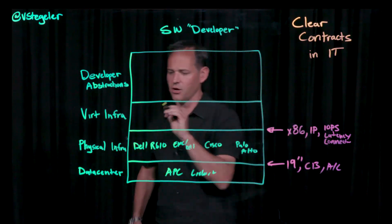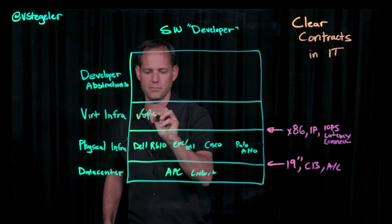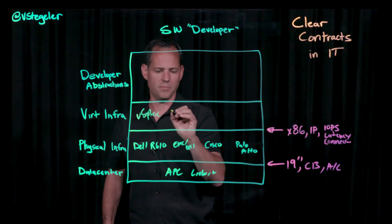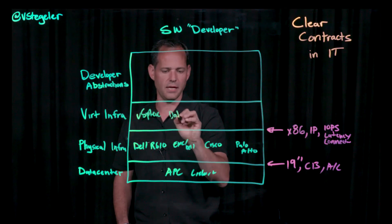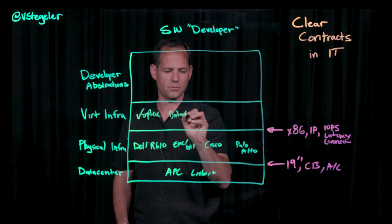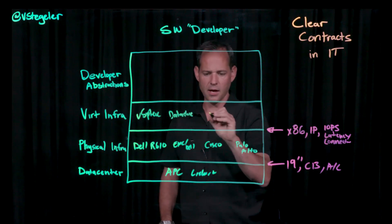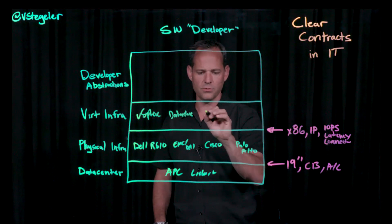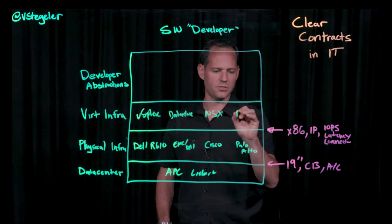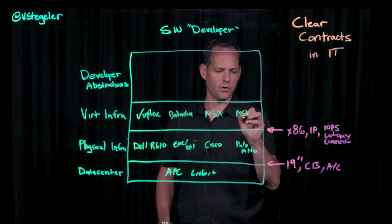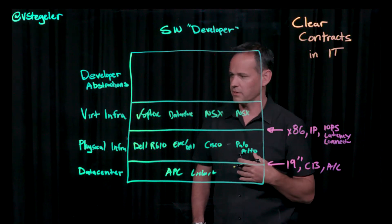With that clear contract in place, I can go in and choose vSphere, maybe choose traditional data stores, use NSX for networking, and potentially integrate NSX from a security perspective as well.